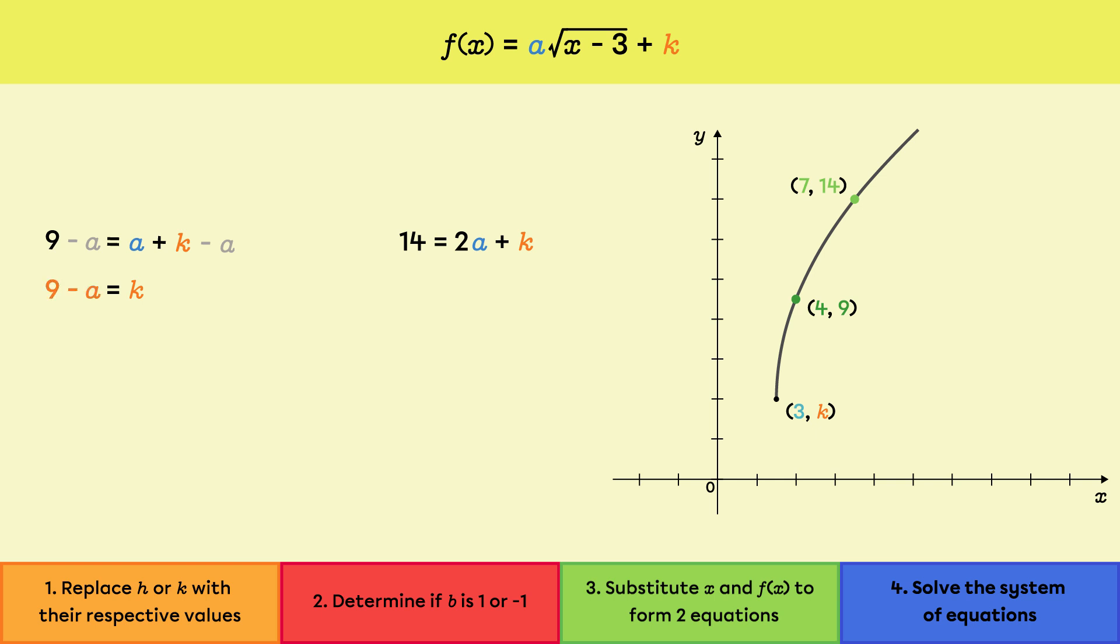Once this variable is isolated, replace its value in the second equation. The equation 14 equals 2a plus k becomes 14 equals 2a plus 9 minus a. 2a minus a is a, so we get 14 equals a plus 9. By isolating a, we find the answer to be 5 equals a.